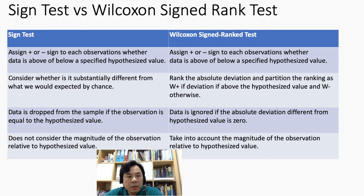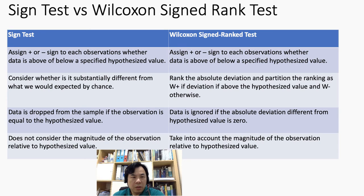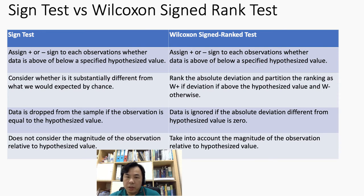The key difference between sign test and Wilcoxon signed rank test is that the sign test does not consider the magnitude of the observation relative to the hypothesized value, whereas the Wilcoxon signed rank test does take into account the magnitude of the observation relative to the hypothesized value. This is because Wilcoxon signed rank test requires ranking the data observations based on absolute deviations, while the sign test does not perform calculations on absolute deviations.